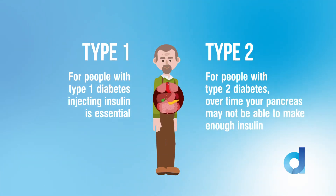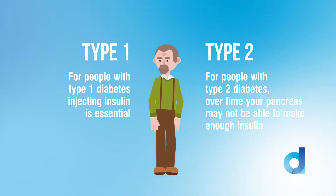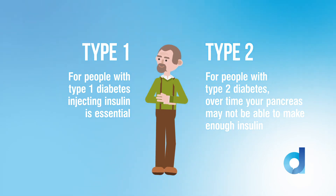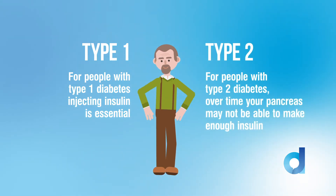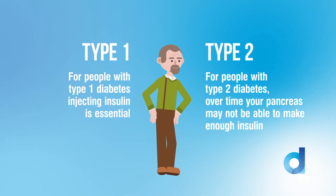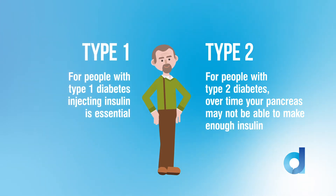Who needs insulin? For people who have Type 1 diabetes, injected insulin is essential and should never be stopped. Some people with Type 2 diabetes may also require injected insulin as their own insulin production declines.